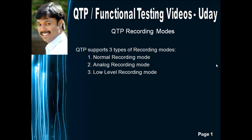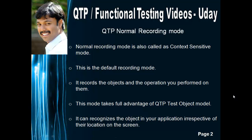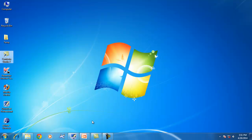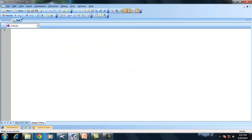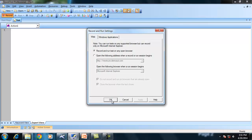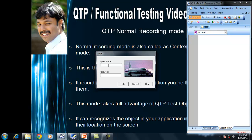So, normal recording mode is also called context sensitive mode. By default, this is the default recording mode. Whenever you record something in your application, it by default uses this normal recording mode. Let me show you with an example — say I have my flight reservation application and I would like to record some operations. When I start recording, by default it will be in normal recording mode. I would like to enter my username and I would like to enter a password.